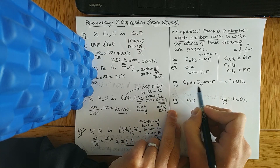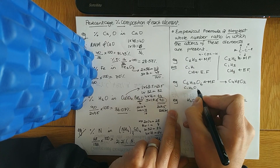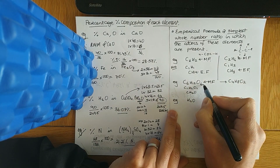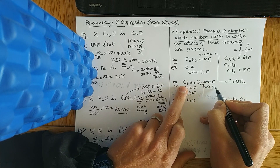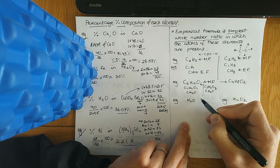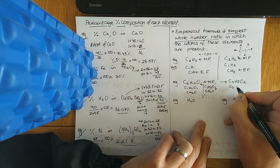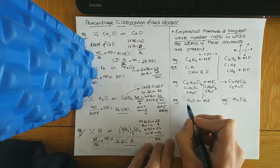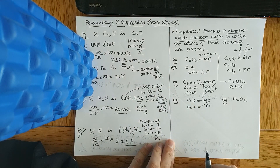For C₆H₁₂O₆, the highest common factor is 6: 6 into 6 once, 6 into 12 twice, 6 into 6 once — giving CH₂O. If you didn't get the highest common factor first, say you divided by 2 to get C₃H₆O₃, you can then see that 3 goes into it and you arrive at CH₂O anyway — just keep simplifying. For H₄O₂, the common factor is 2: 2 into 4 is twice, 2 into 2 once — giving H₂O. The molecular formula and empirical formula of water are both the same: H₂O.